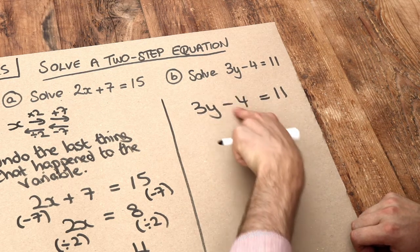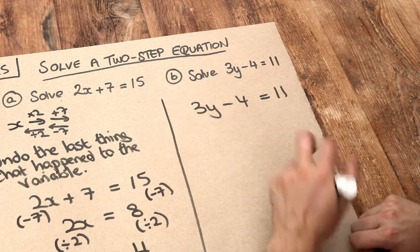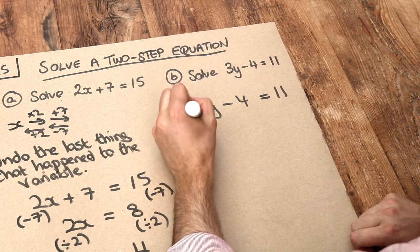The last thing we did on the left-hand side was subtract 4. So we want to get rid of the minus 4 first by doing the opposite. We add 4.